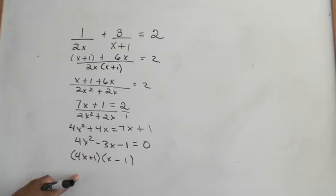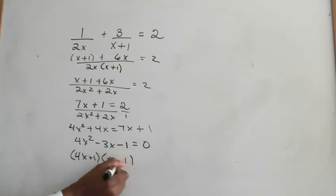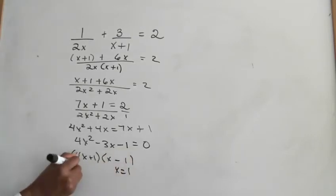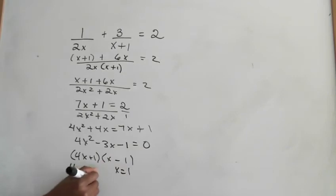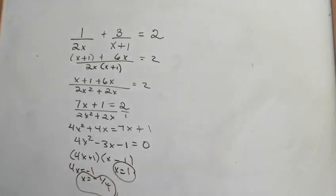Okay, so what do we get? Solve it. x minus 1 is 0, that means x is equal to 1. 4x is equal to negative 1, that means x is equal to negative 1 fourth. Okay, so here are the values of x.